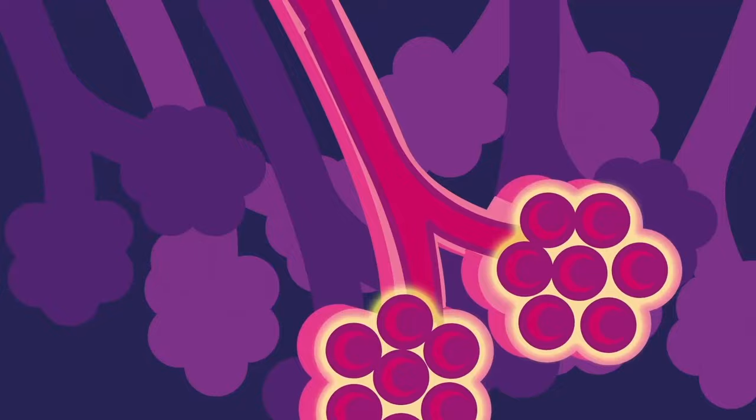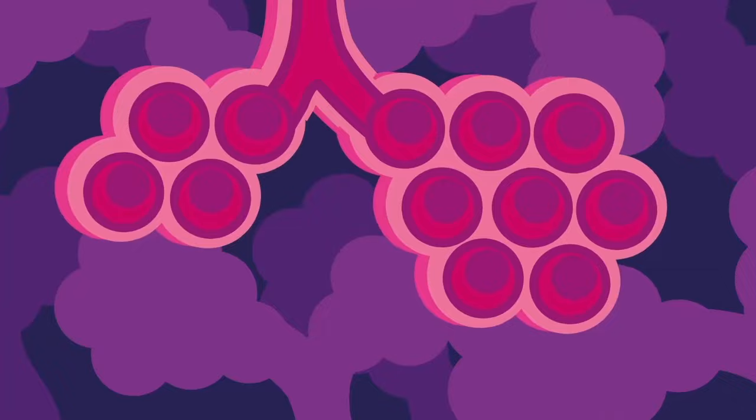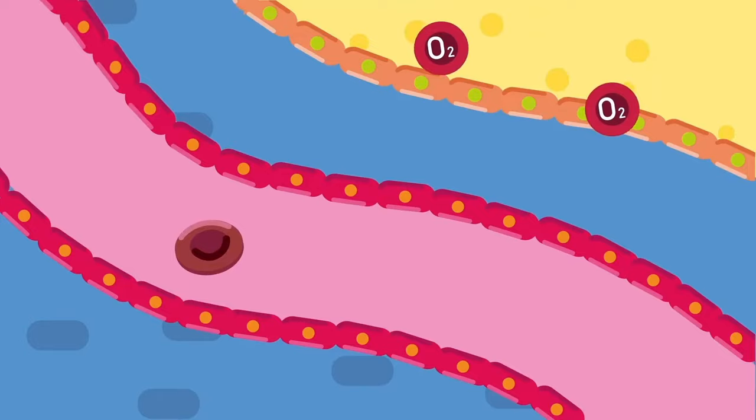Alveoli are air sacs with thin walls and moist surfaces. A network of blood capillaries covers alveoli. Oxygen from the air diffuses into the blood supply, passing close to each alveolus in the lung. Carbon dioxide is diffused back to the alveoli as waste.